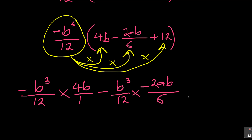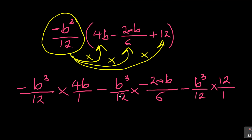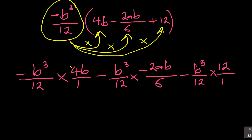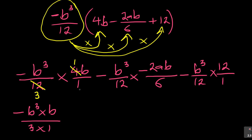Be careful of these two negatives. Then again: minus b cubed over 12, times 12 over 1. I'm doing it this way because it allows you to see that 4 cancels into 12, giving you 3. So you now have: minus b cubed, multiplying the tops, times b, over 3 times 1.